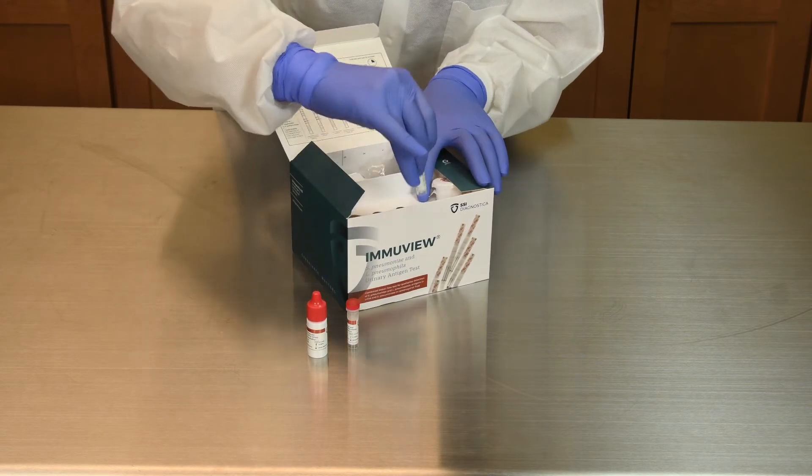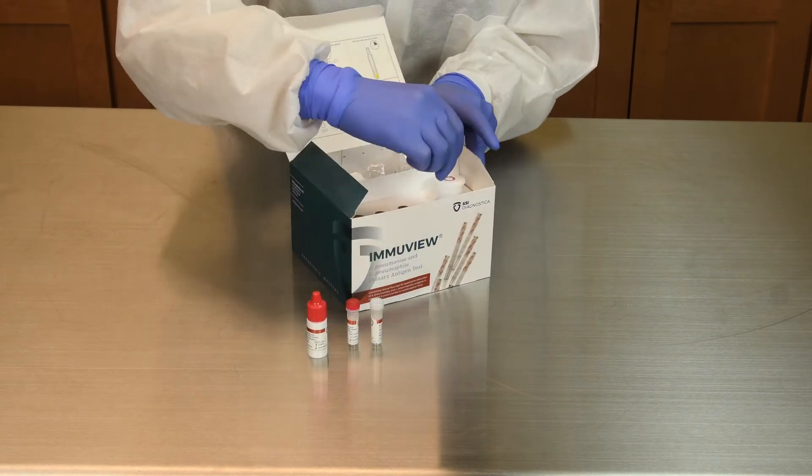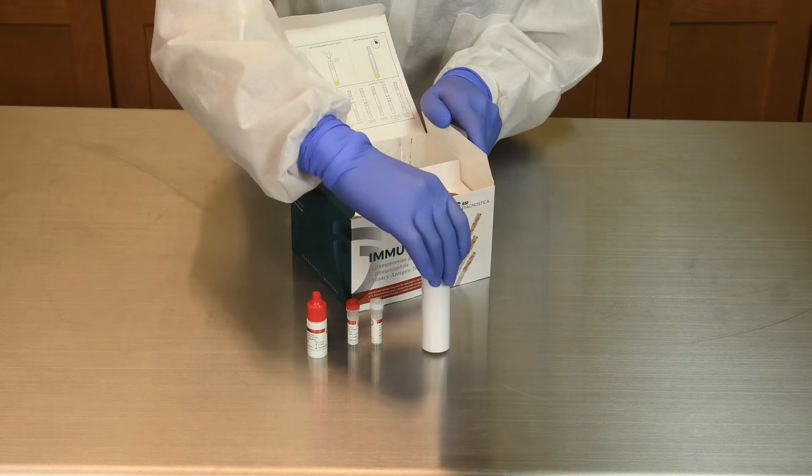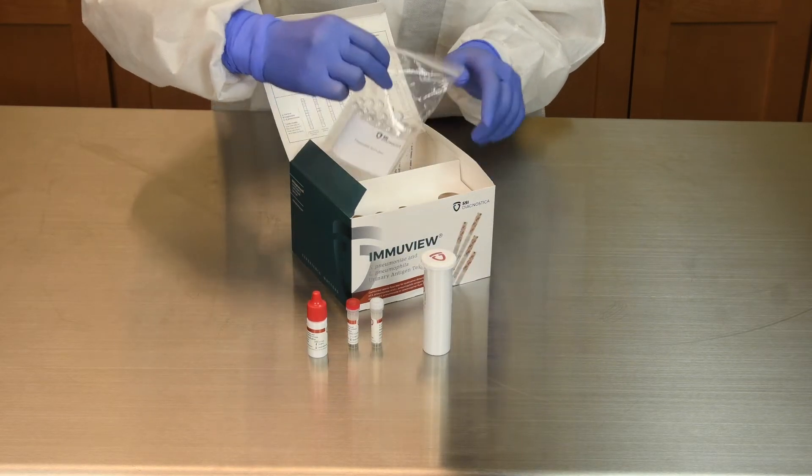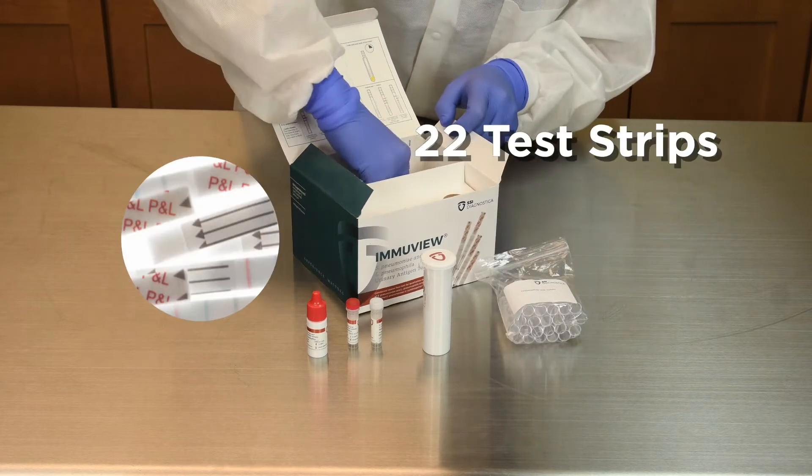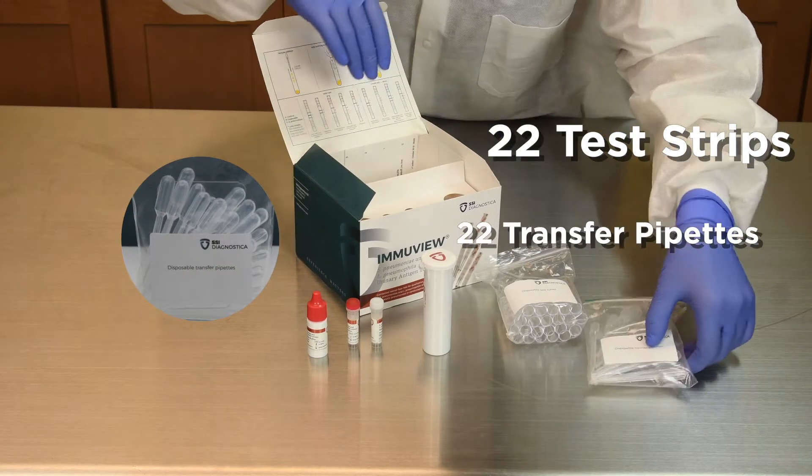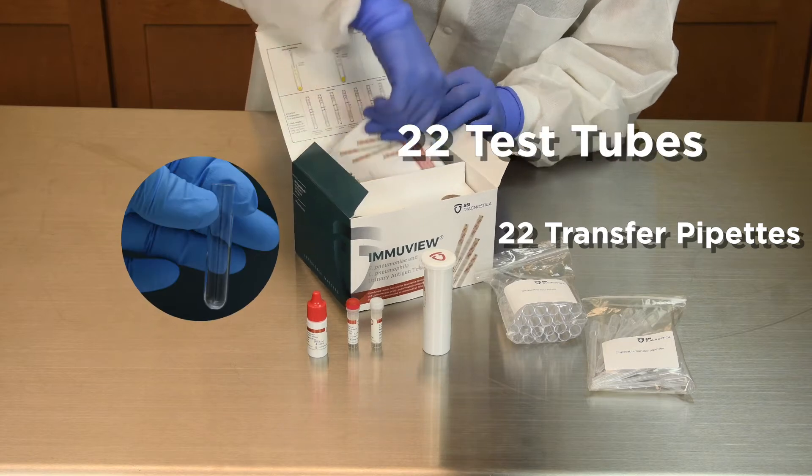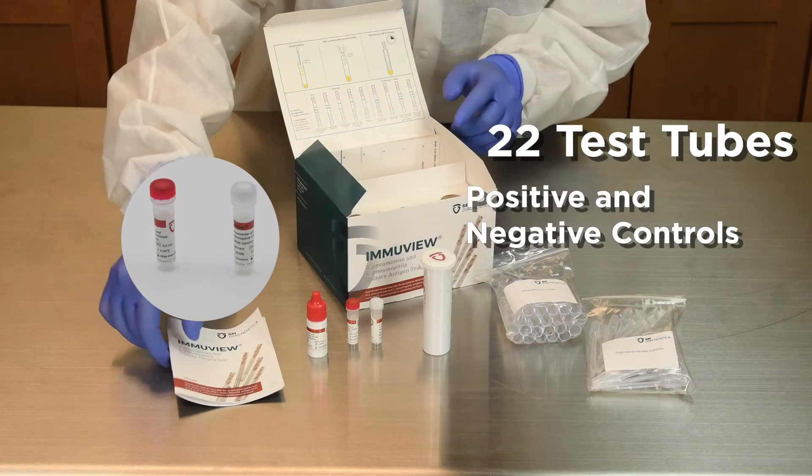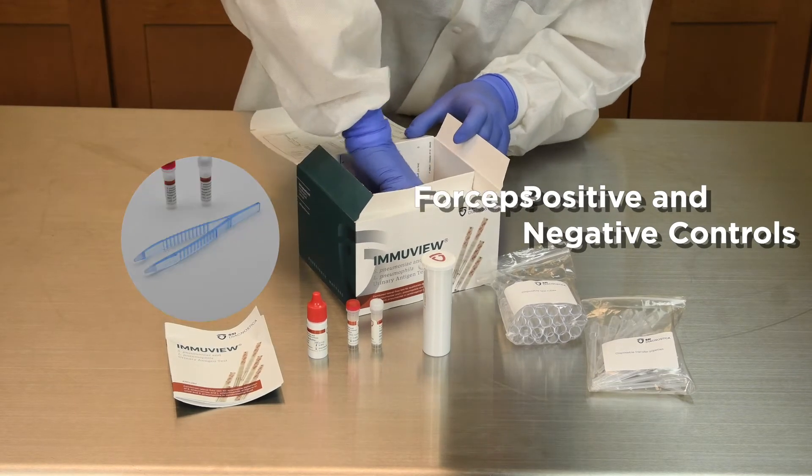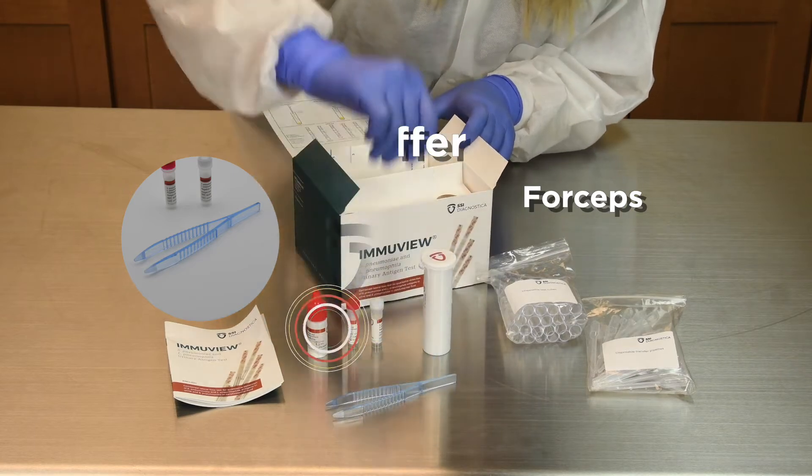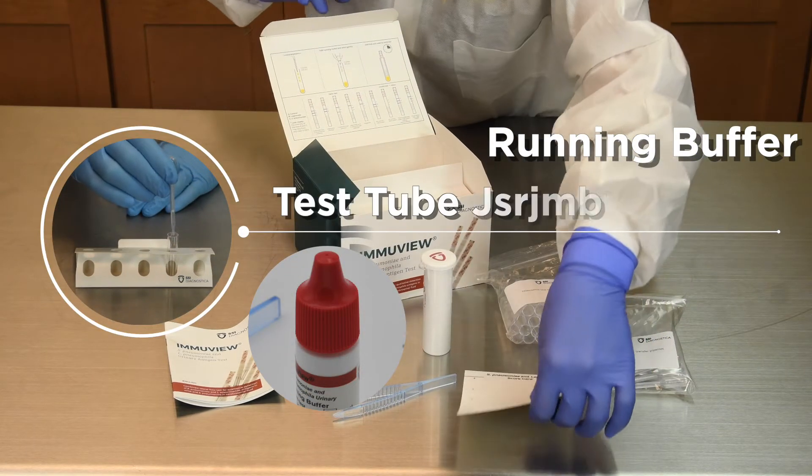Both tests can be performed from a urine sample since bacterial antigens are shed through the urinary tract. The ImmuView kit contains 22 test strips, 22 transfer pipettes, 22 test tubes, positive and negative controls, forceps, running buffer, and a test tube holder.